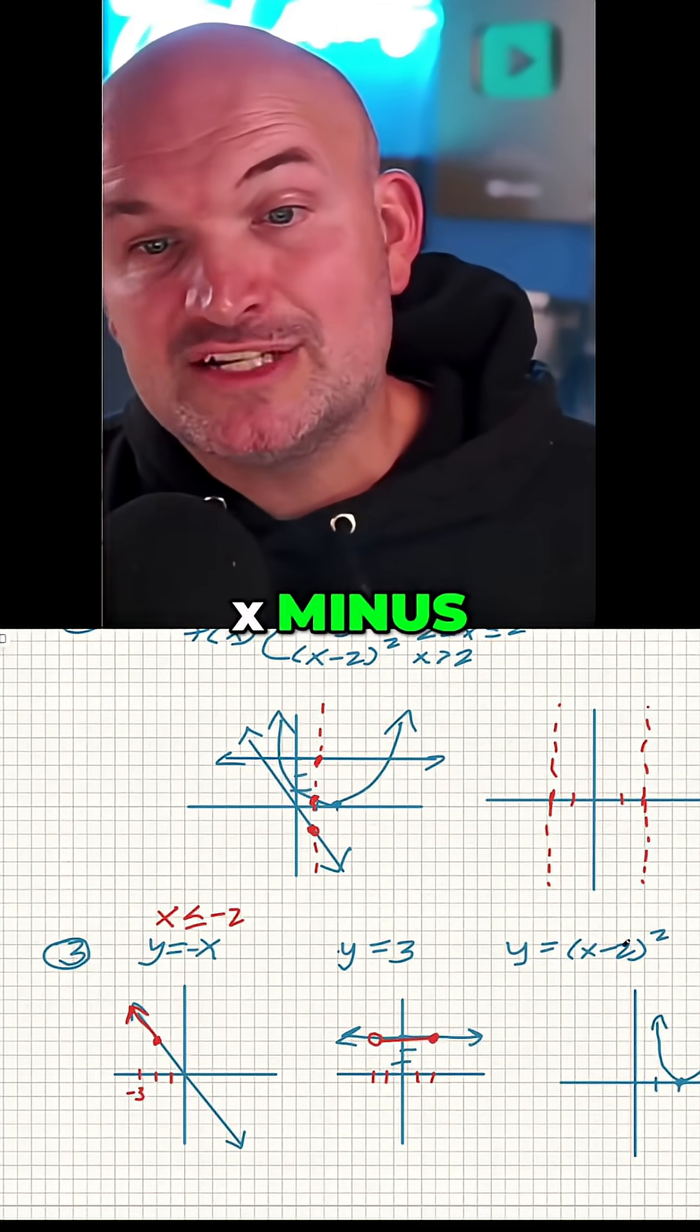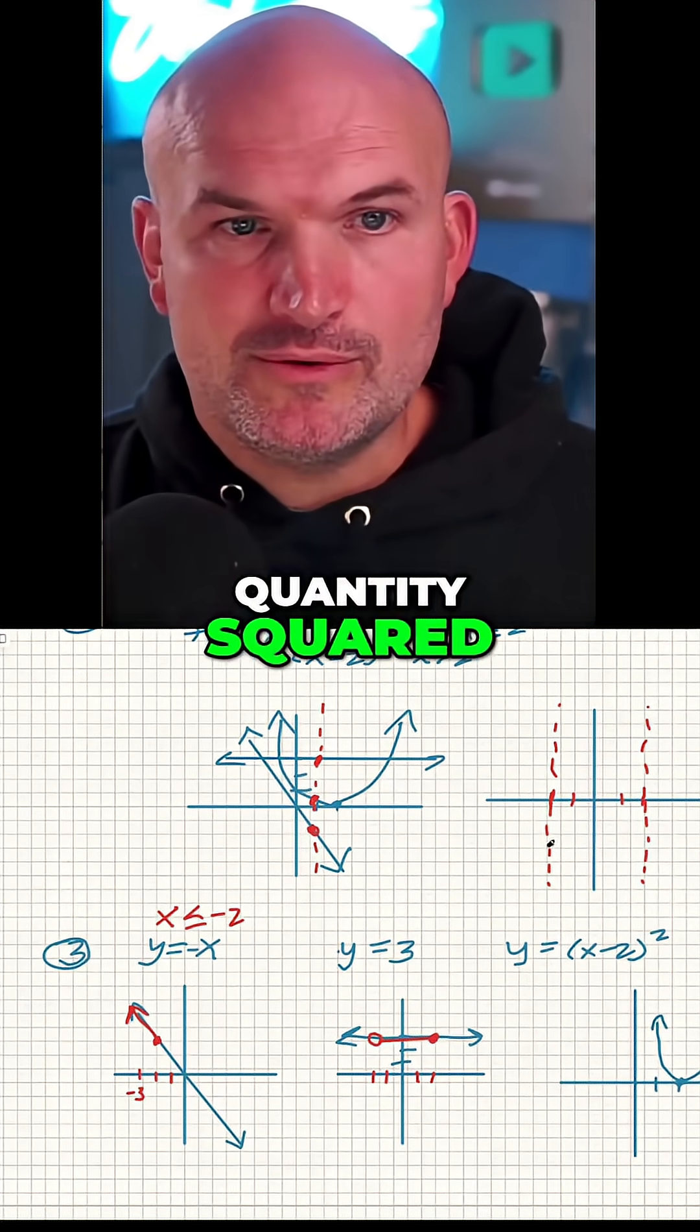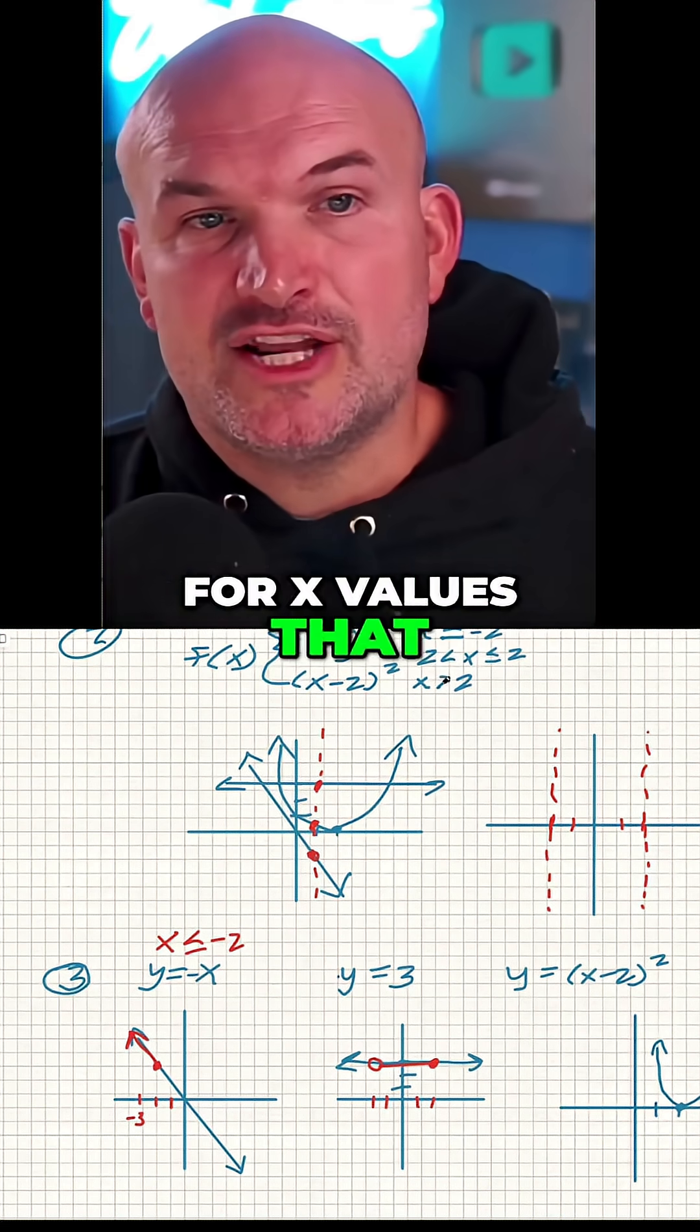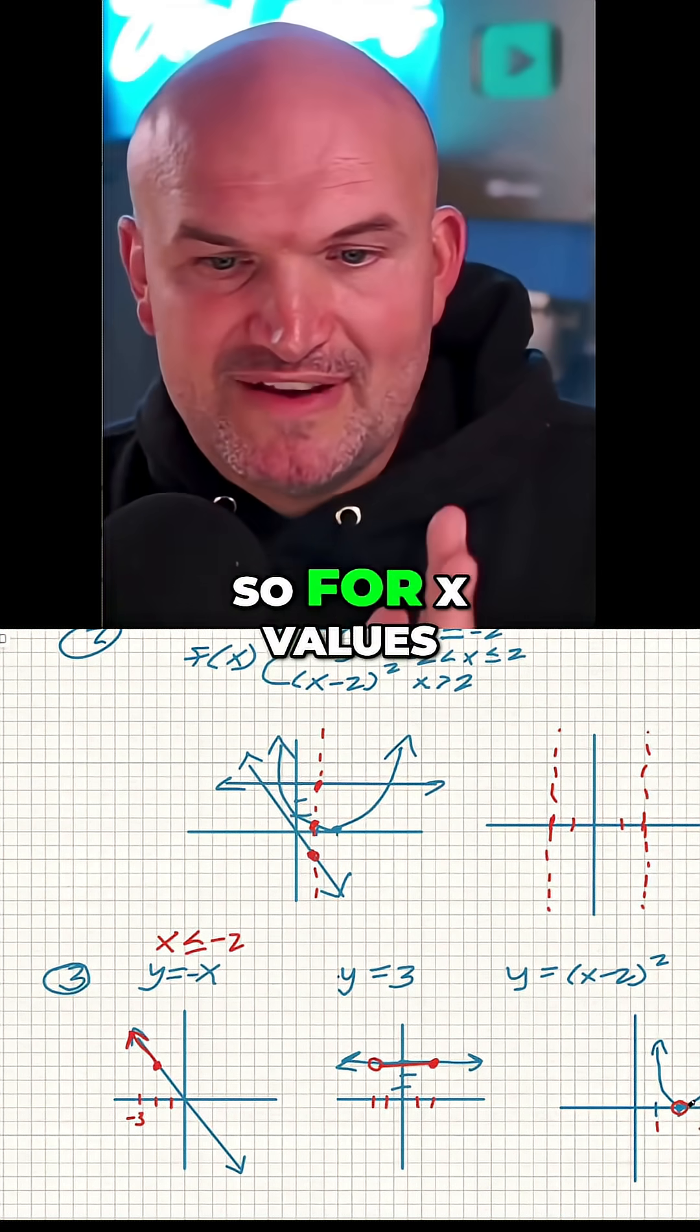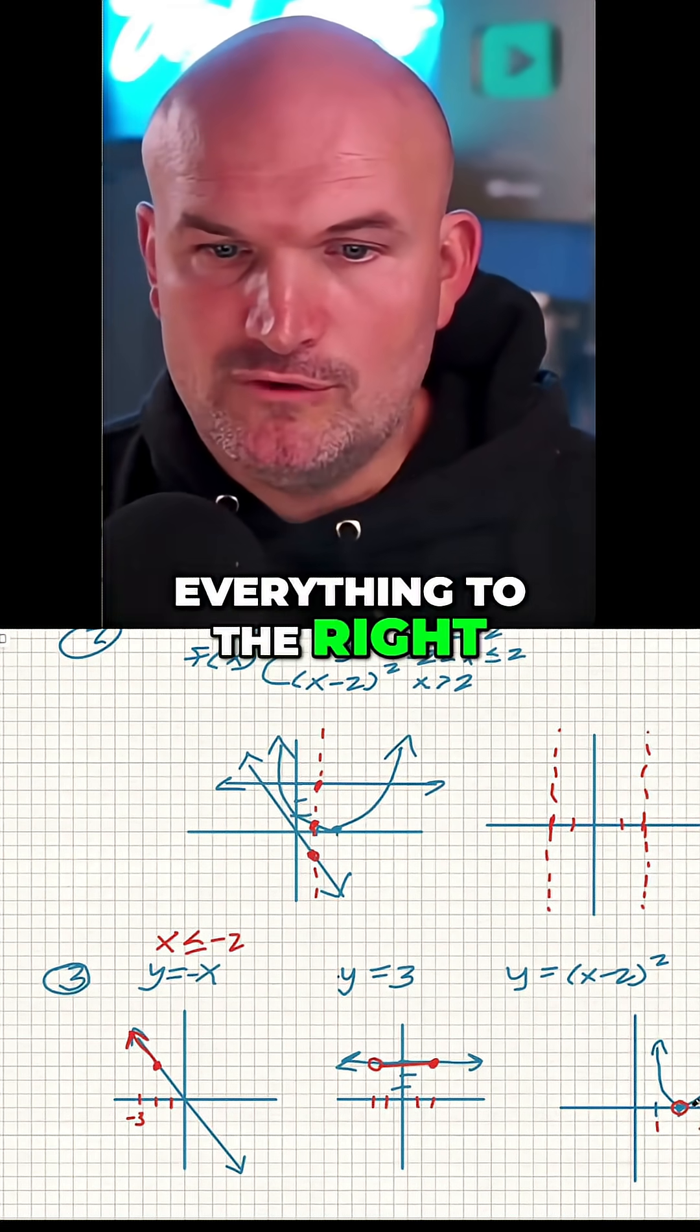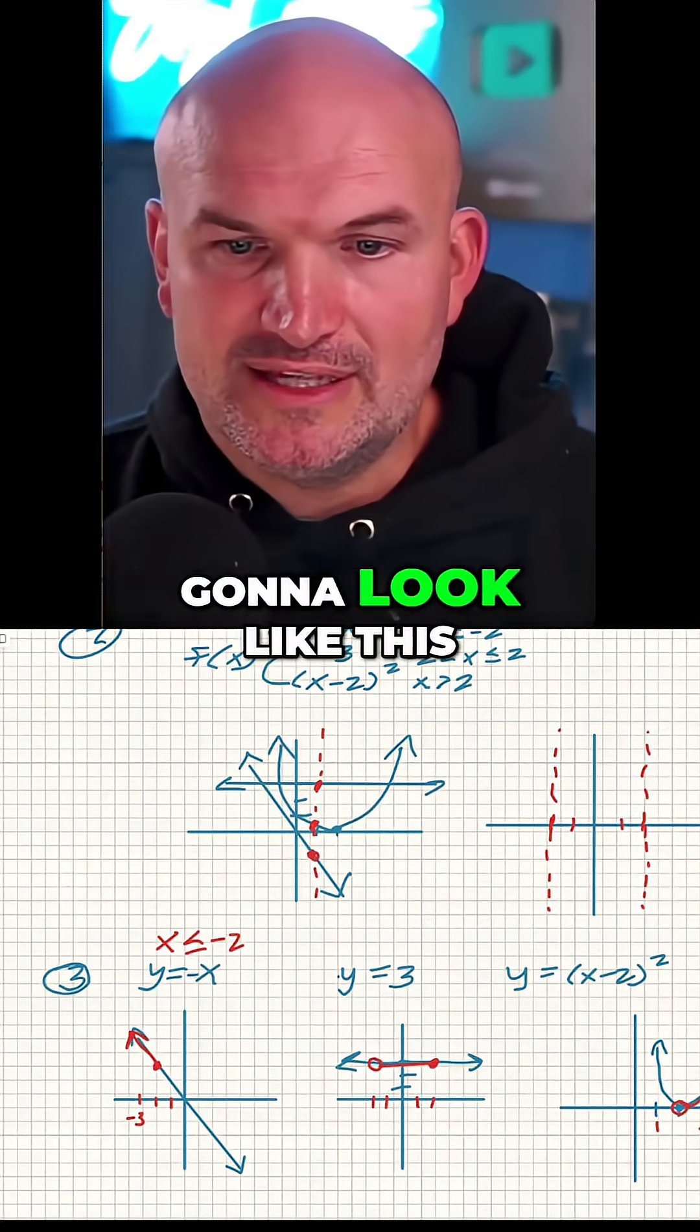And then the third one is x minus two quantity squared, but that's only defined for x values that are greater than two. So for x values that are greater than two, it's going to be everything to the right over here. So this graph is going to look like this.